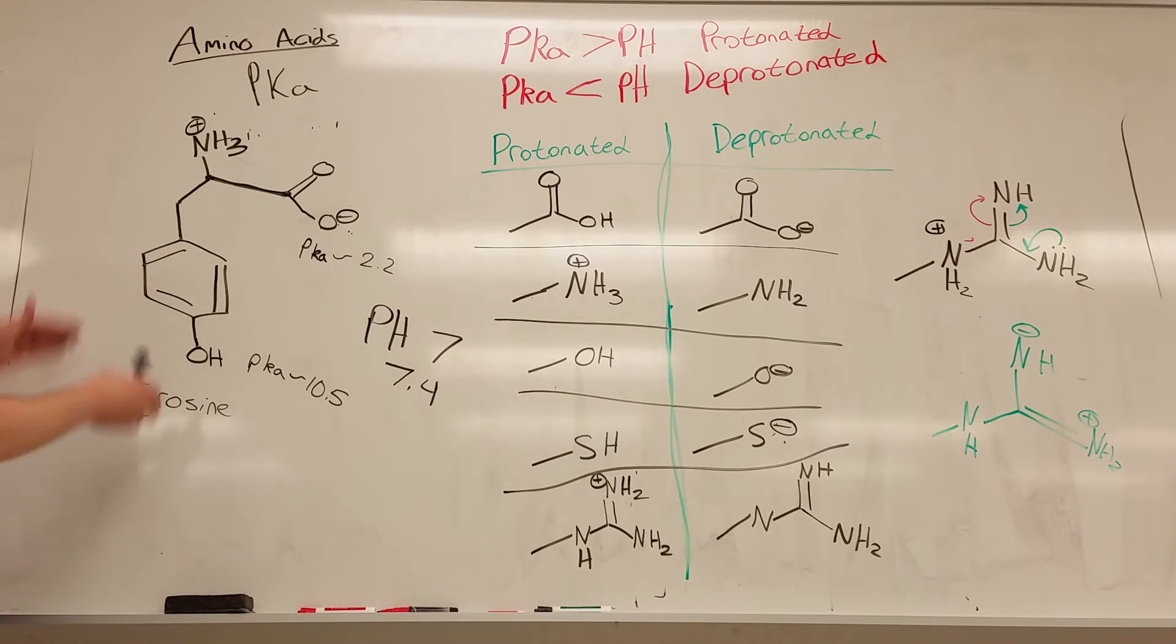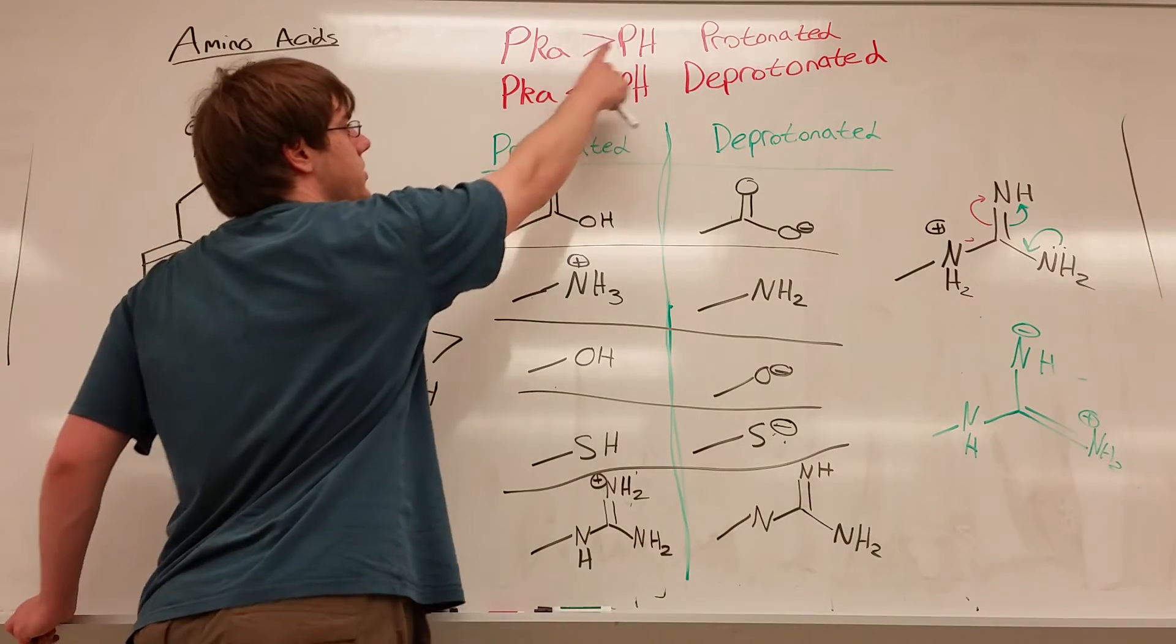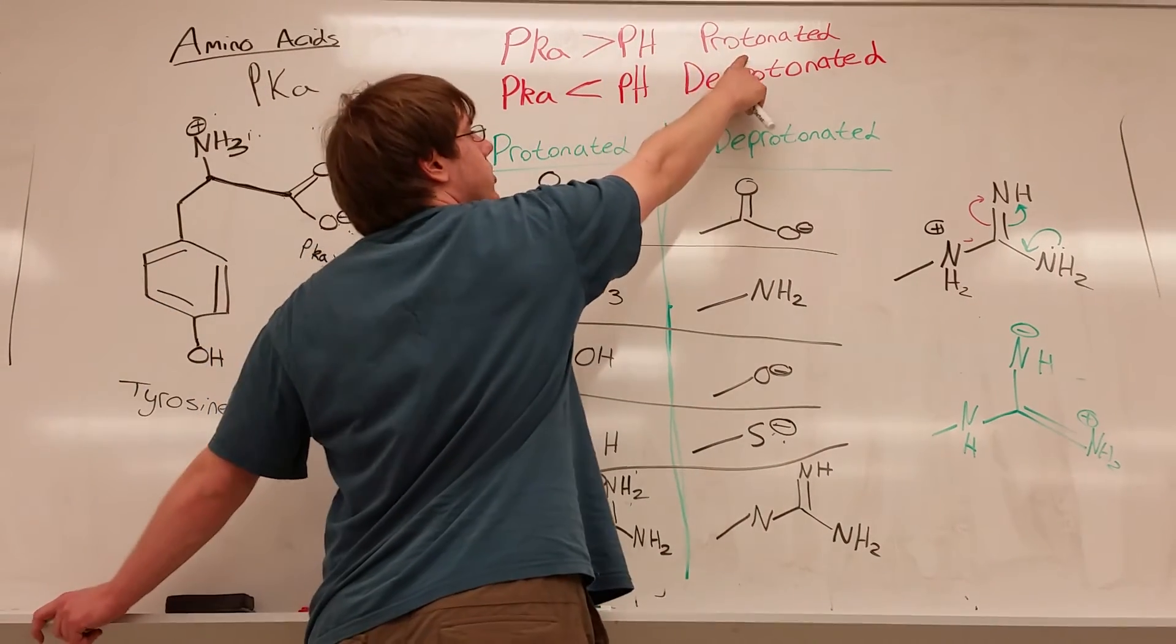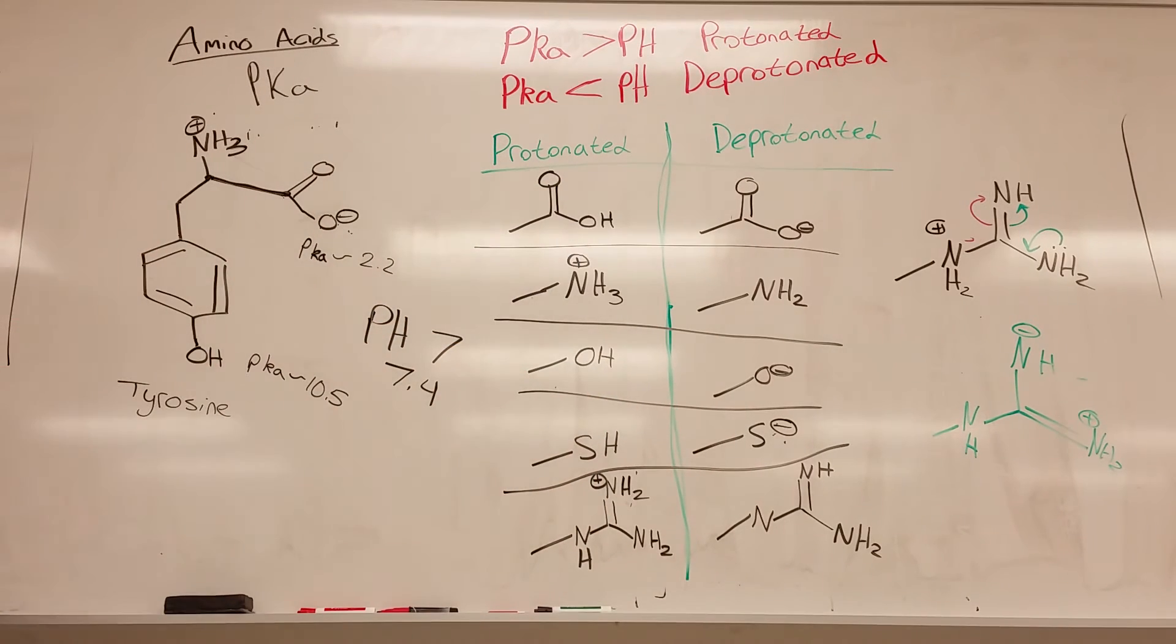Finally, I have my tyrosine. So the whole R group is referred to by this pKa, but it's really talking about the thing that can afford to gain or lose a hydrogen, and that's your OH. So this OH has a pKa of 10.5. 10.5 is greater than 7. pKa is greater than 7, protonated. And my protonated form for OH is OH. So this stays the same. And so this right here would be my structure of tyrosine at a pH of 7.